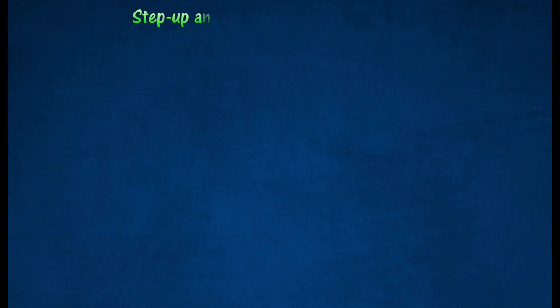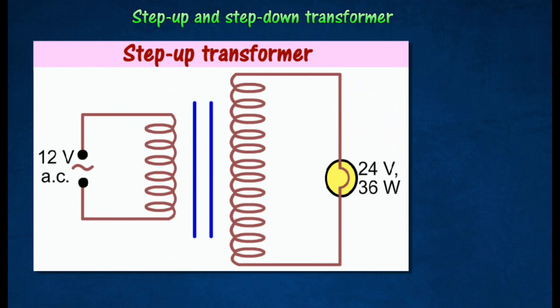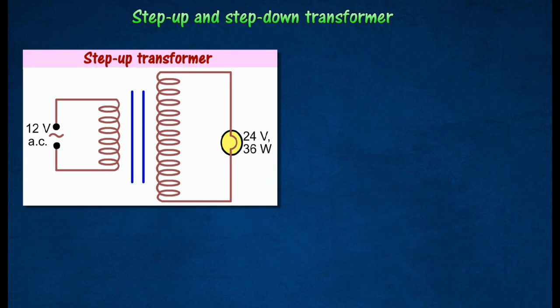Transformers can be of two types: step-up transformer and step-down transformer. A step-up transformer is a transformer which increases the voltage of an alternating current. In a step-up transformer, the number of turns in the secondary coil is more than that in the primary coil.